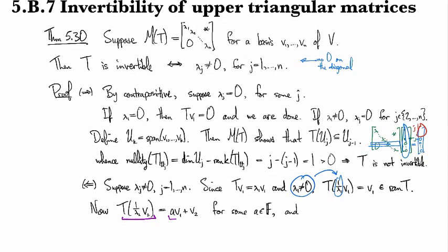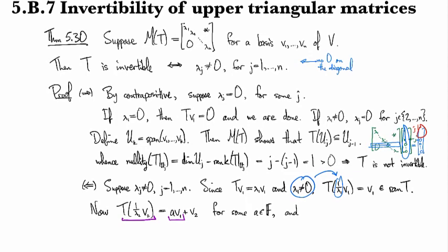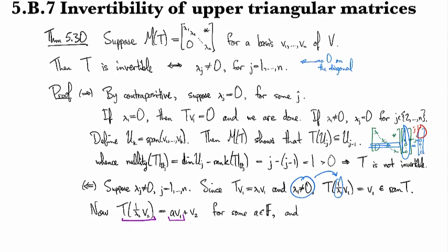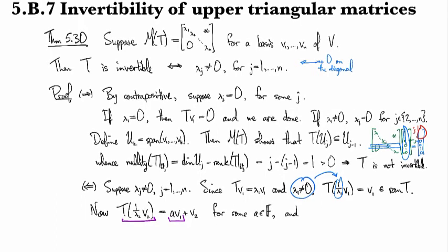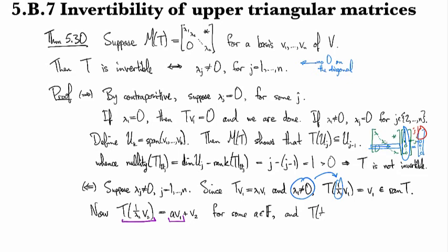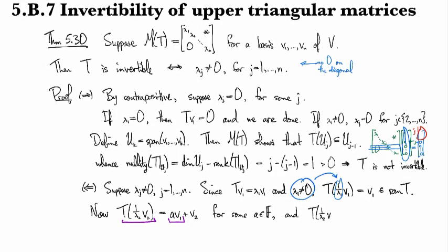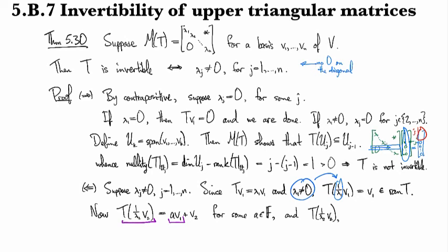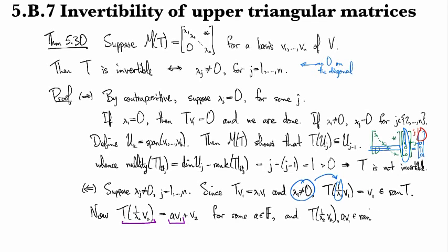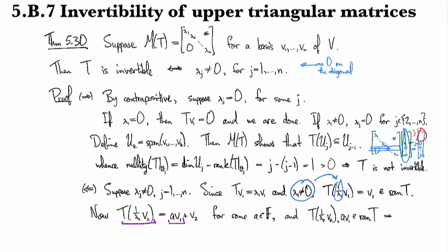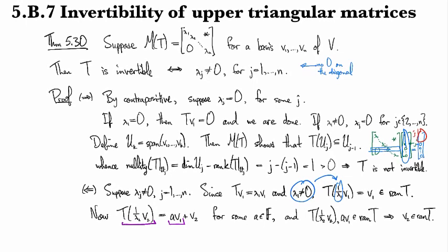From the previous part, a·v_1 is in the range of T, so since the range is a subspace and closed under addition, we know that gives v_2 in the range of T as well.